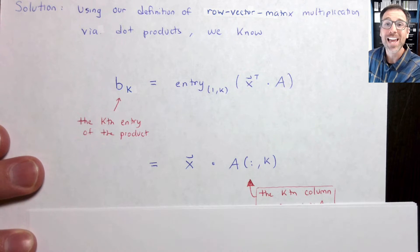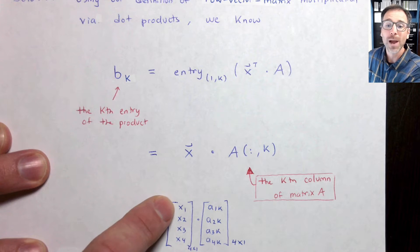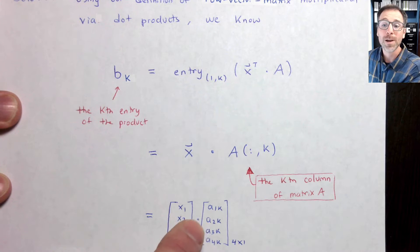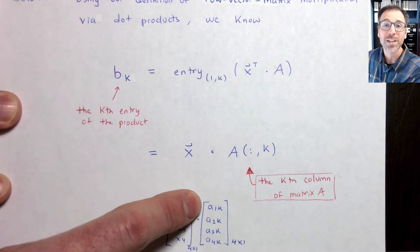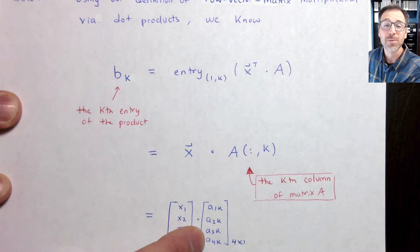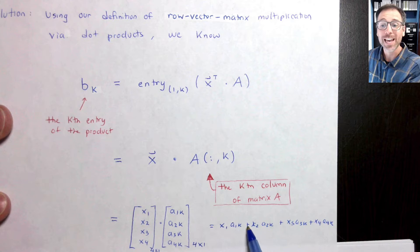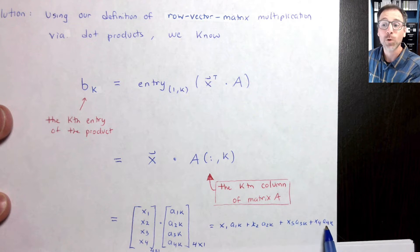I remember that A is a 4 by 3. So that means that x is going to be a 4 by 1, x1, x2, x3, x4. Here because A is a 4 by 3, I know that the kth column is going to be a 4 by 1. So now I have a1k, a2k, a3k, a4k. And I can write that dot product as x1 times a1k plus x2 times a2k plus x3 times a3k plus x4 times a4k.